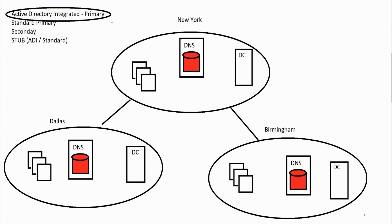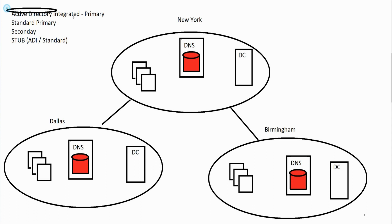With Active Directory, the preferred database type is the Active Directory integrated primary. In a perfect world, you want all of your DNS databases to be ADI primary. The reason is that if you choose this option, Active Directory handles replicating your databases for you, everything gets encrypted, and replication follows the same schedule Active Directory uses. This has been the recommended approach since Active Directory was introduced in the year 2000.